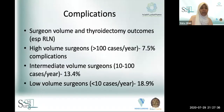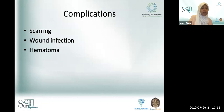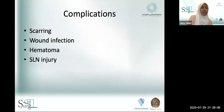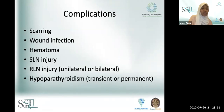Specific complications of thyroidectomy: I always discuss with patients the risk of scar, wound infection, and hematoma. Superior laryngeal nerve injury is discussed with professional voice users. Recurrent laryngeal nerve injury is discussed with all patients — bilateral injury is a surgical emergency causing stridor and requiring tracheostomy. Hypoparathyroidism can be transient or permanent. Thyroid storm is a rare but serious emergency.